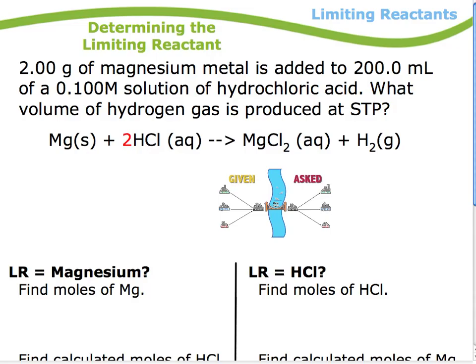For example, in this question here, 2 grams of magnesium metal, let me just write this information in. Mass is 2.00 grams, is added to 200 mL of a 0.1 molar solution of hydrochloric acid. So I have a volume here of 0.200 liters, and molarity is 0.100 molar. What volume of hydrogen gas is produced at STP? And our temperature, 273.15, and our pressure, 101.325 kilopascals for STP.